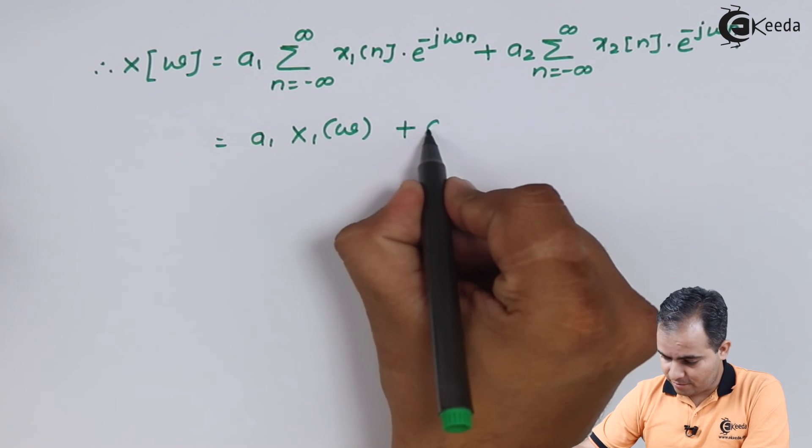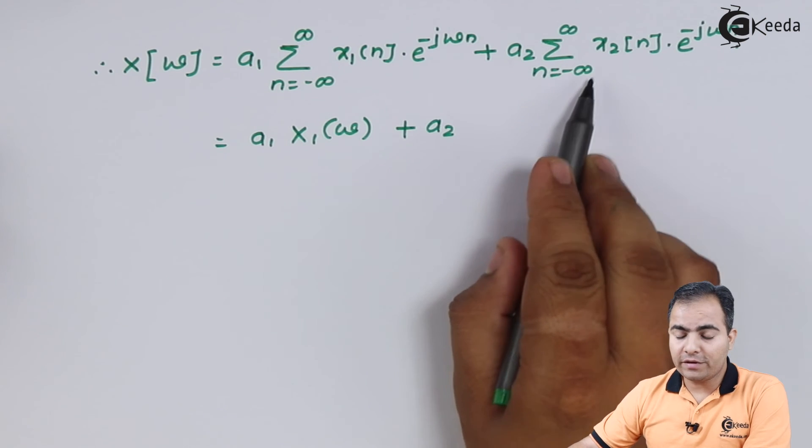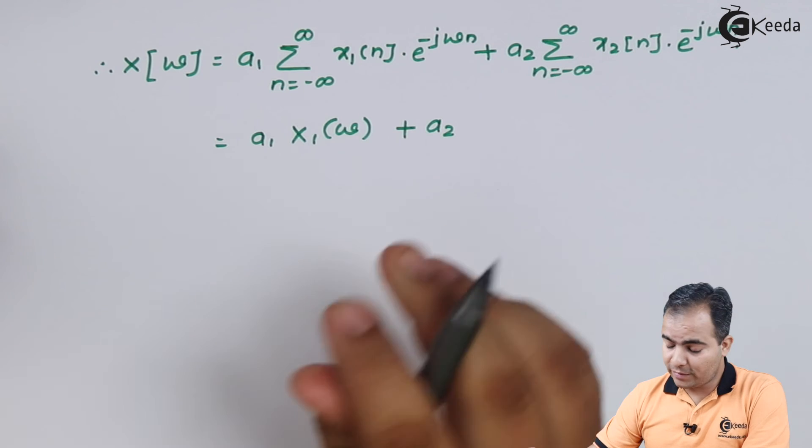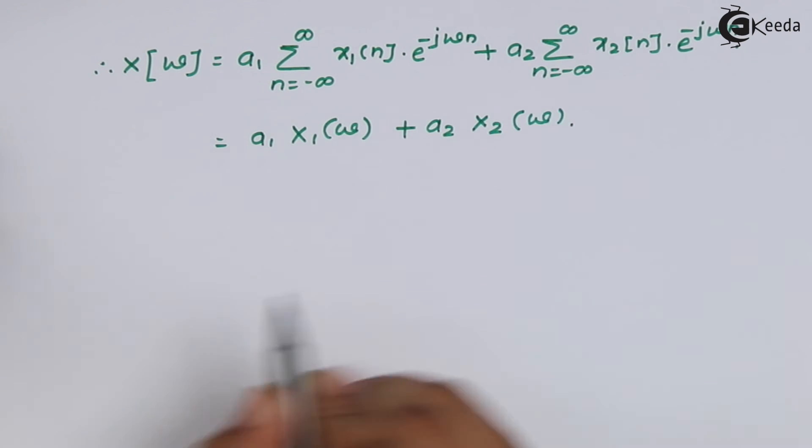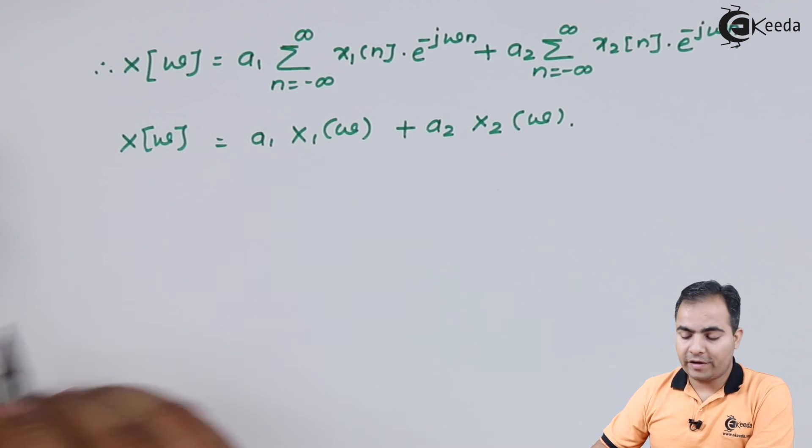Similarly, summation n from minus infinity to infinity, x2[n]·e^(-jωn), can be written according to definition of DTFT, and this is nothing but X2(ω).